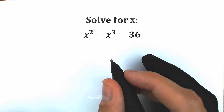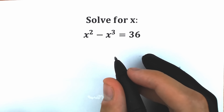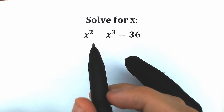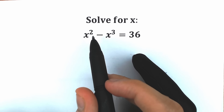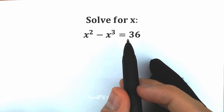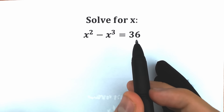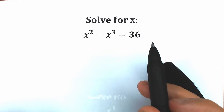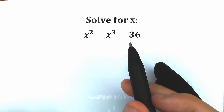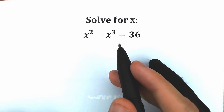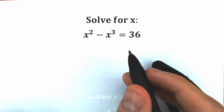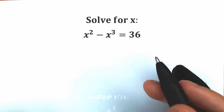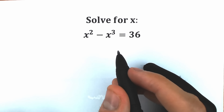Hello everyone, happy to see you here, welcome back to my channel Higher Mathematics. Today we have a really interesting equation: x squared minus x cubed equal to 36. I know a lot of students might be saying this is a very easy challenge, and a lot of students can easily solve this by inspection, but let's see what will happen right here.